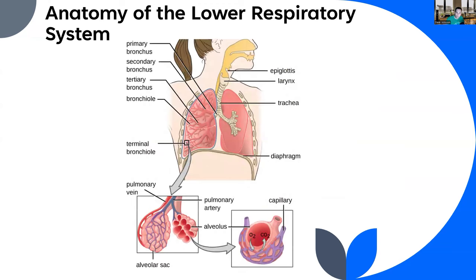Moving down to the lower respiratory tract, we're looking at things like the larynx and the trachea. We're talking about things that happen in the lungs. When we start talking about things like tuberculosis and pneumonia, this is where we're going to end up. You can feel free to come back and look at these slides when you need to.